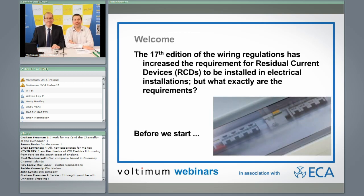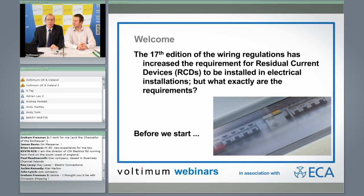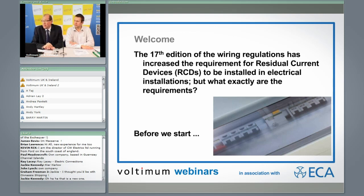Good afternoon. My name is David Thomas, ECA education training manager, and this is Gary Parker, one of our technical assessors. We're here at Voltman, and this is one of a series of webinars we're doing in association with Voltman on issues that affect our industry. Today's is going to be on the 17th Edition of the Wiring Regulations — requirements for residual current devices.